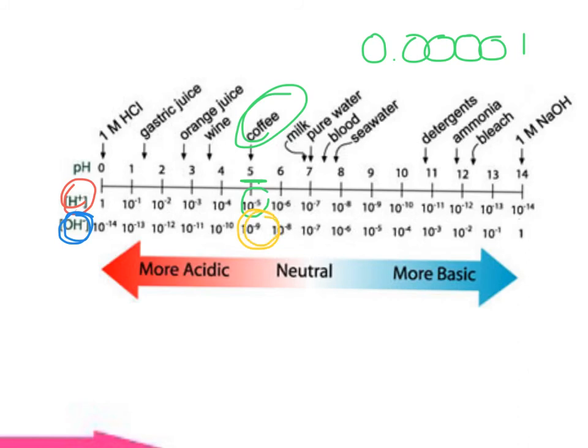So when you're given the hydrogen ion concentration, or even just the pH of something, all you need to do is subtract that number from 14 in order to get the inverse of that, or the hydrogen or hydroxide ion concentration. So in this case, coffee had a 10 to the negative 5, and we subtract that from 14 to arrive at the OH concentration of 10 to the negative 9.